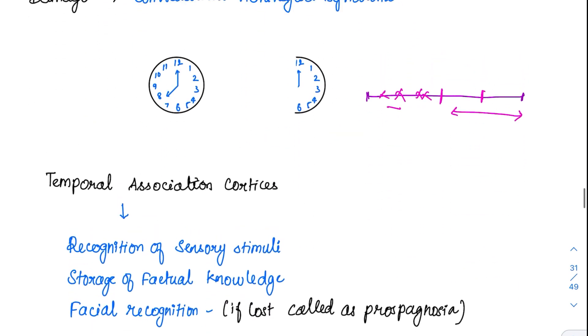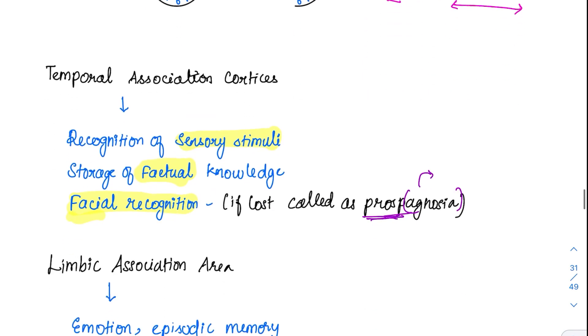Now coming to the temporal association area. This temporal association area is closely related with recognition of some of the sensory stimuli, and it is also storing the factual knowledge. And there is a very specific area for facial recognition. Suppose your friend comes in, you can just by seeing, he doesn't have to talk to you. Just by seeing his face, you will be able to recognize. But in this person, what happens is, whenever there is a temporal lobe association area damaged, he will not be able to recognize his known people, like maybe his friends or relatives also. This type of not recognizing the facial features is called prosopagnosia. Agnosia is the term which is used for not knowing. Prosopagnosia means inability to identify a subject by facial features.